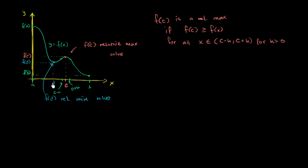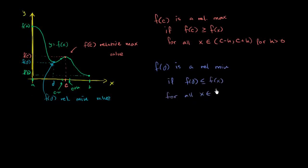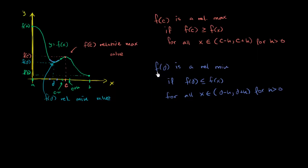We would just write: let's take d as our relative minimum — we can say that f of d is a relative minimum point if f of d is less than or equal to f of x for all x in an open interval between d minus h and d plus h, for h greater than 0. So if this is d plus h and this is d minus h, f of d is always less than or equal to any of the other values in that interval. That's why we say it's a relative minimum point. In everyday language: relative max if the function takes on a larger value at c than for the x values around c, and relative minimum if the function takes on a lower value at d than for the x values near d.